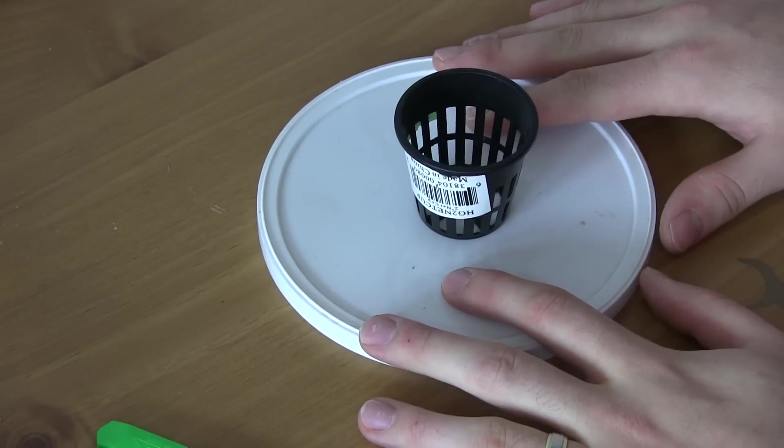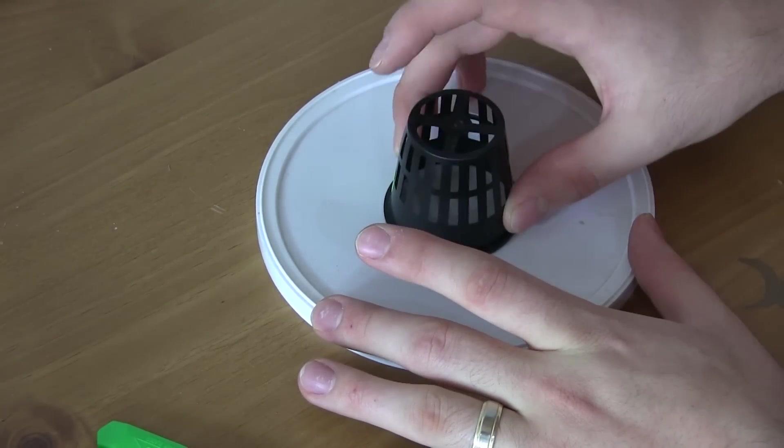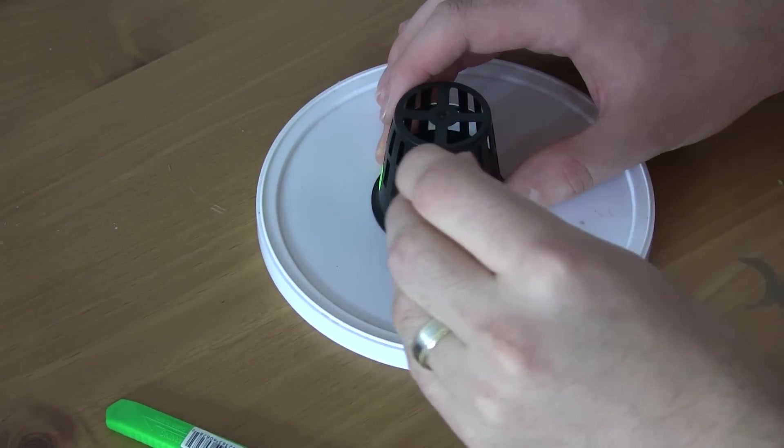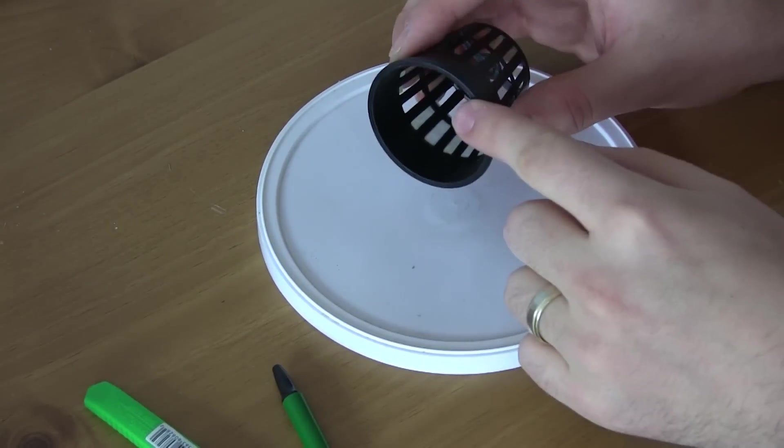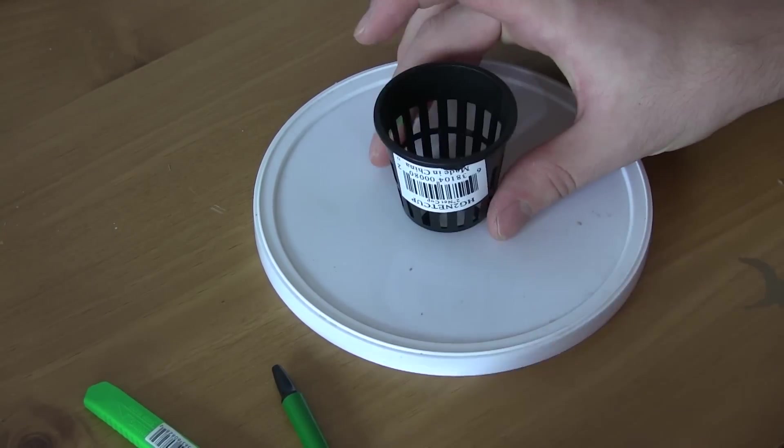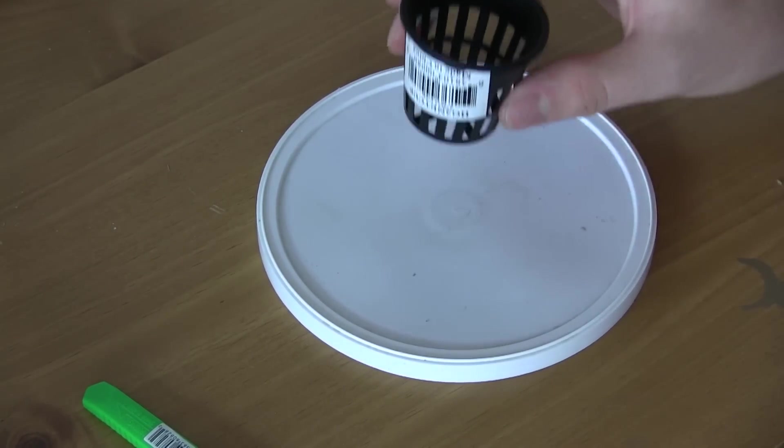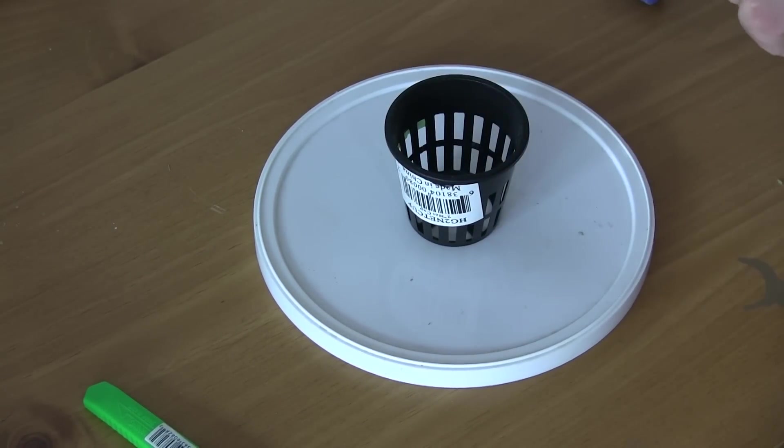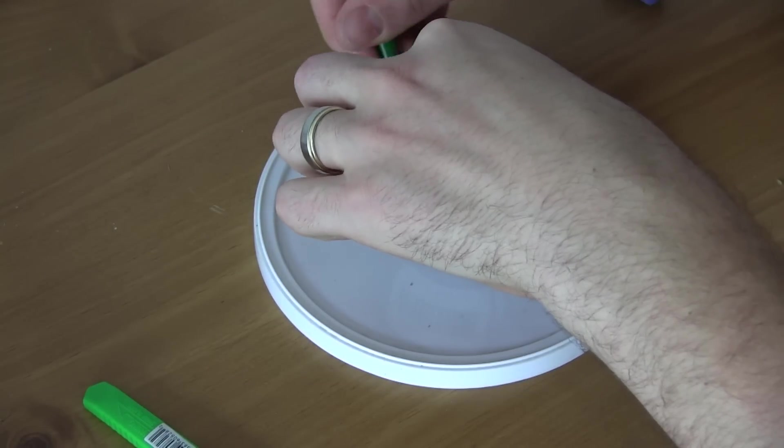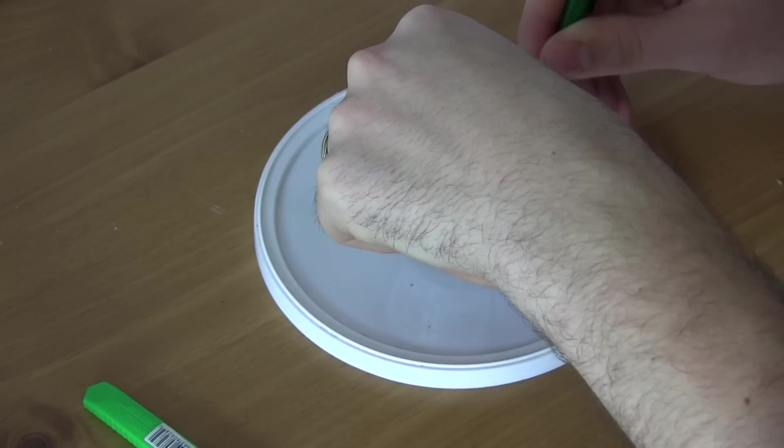Alright, so this is a really important step. When you're cutting the hole in the lid, you want to go right in the center. But you do not want to tip it upside down because when you take the circumference of the top of the net cup, it's going to be too wide and your net cup is going to fall right through the hole. You want to go with the narrowest part of the net cup, so set it up just like it was sitting in the system and use that for your circumference.